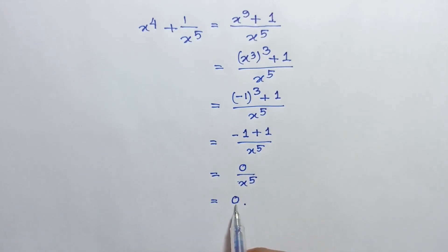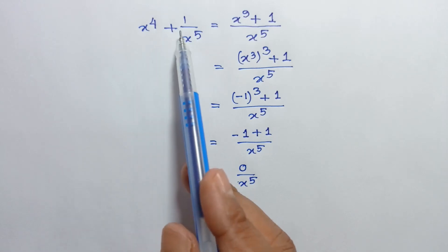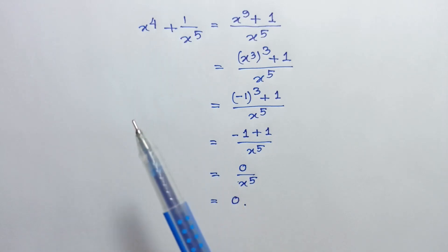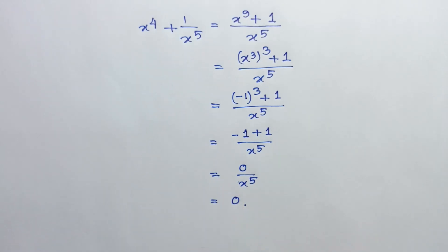So 0 is the value of x to the power 4 plus 1 over x to the power 5. If you like this video please subscribe to my channel. Thanks for watching.